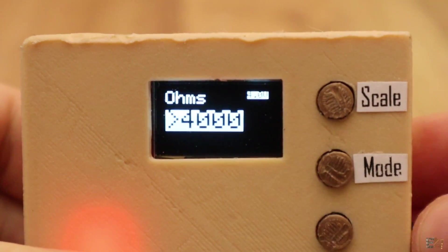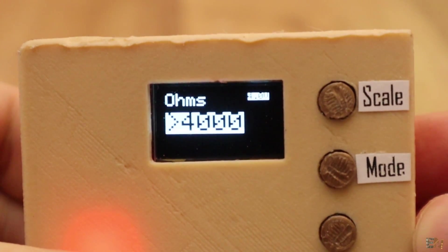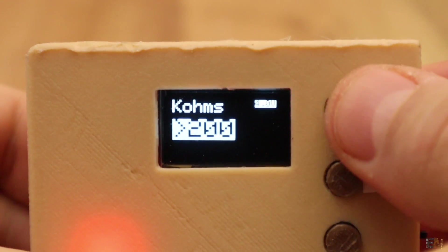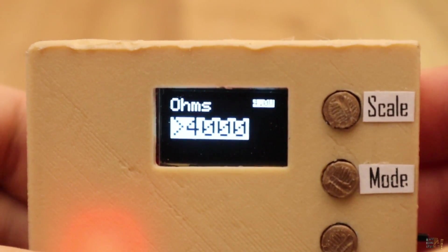Now I push the middle button and I change the mode to resistance. With the top button I can change the scale from ohms to kilo ohms and mega ohms.